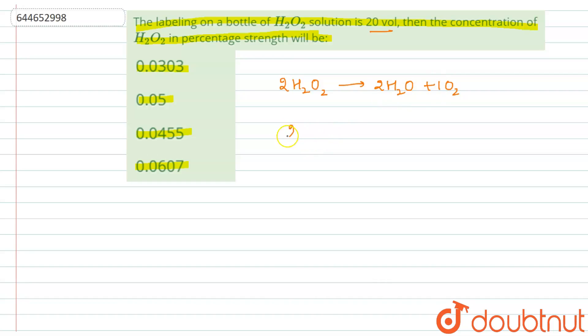Now 2 moles, we can write this as 2 moles of H2O2 is giving 1 mole of oxygen, 1 mole of O2. And we know that 1 mole of oxygen occupies 22.4 liters of oxygen.